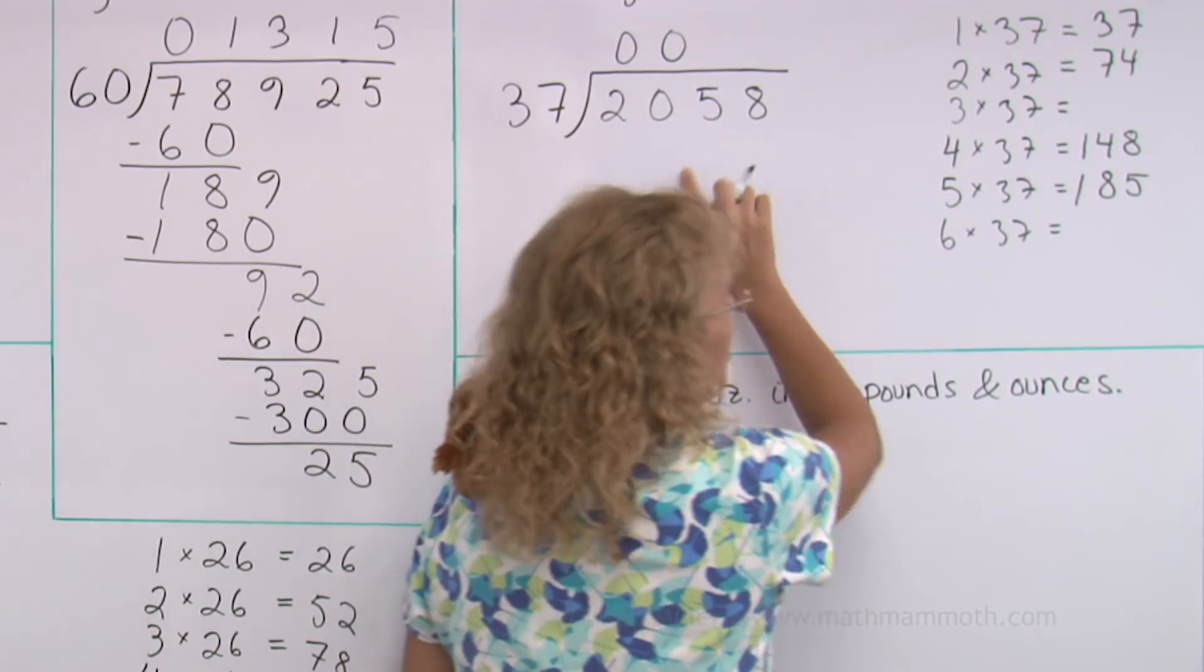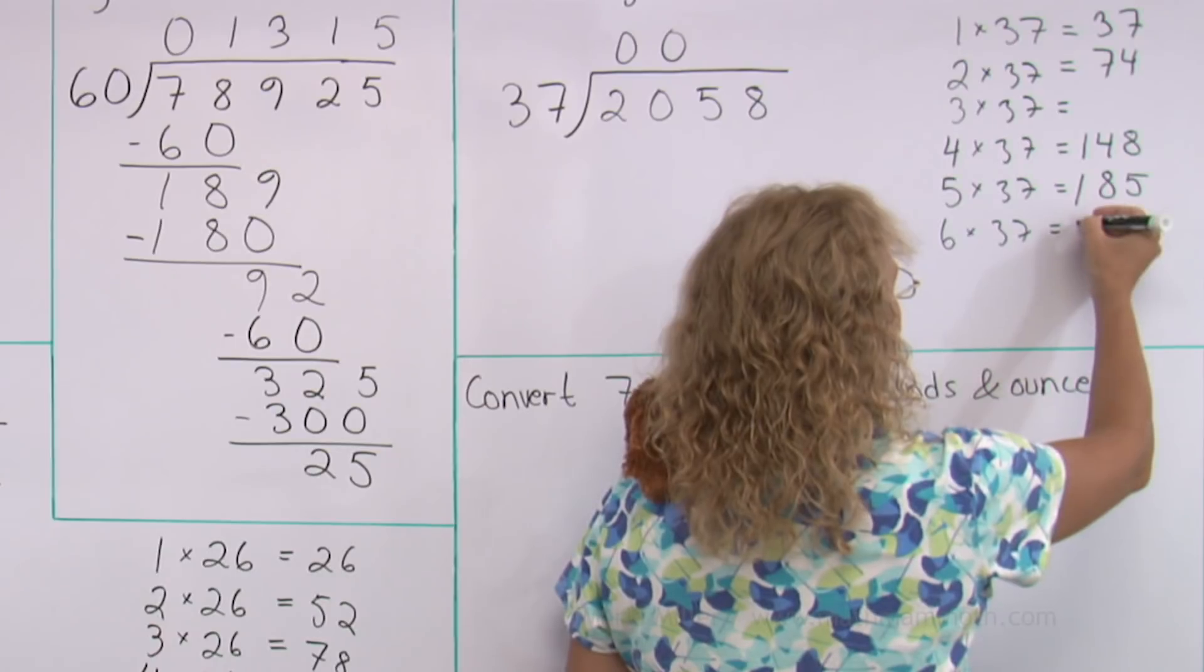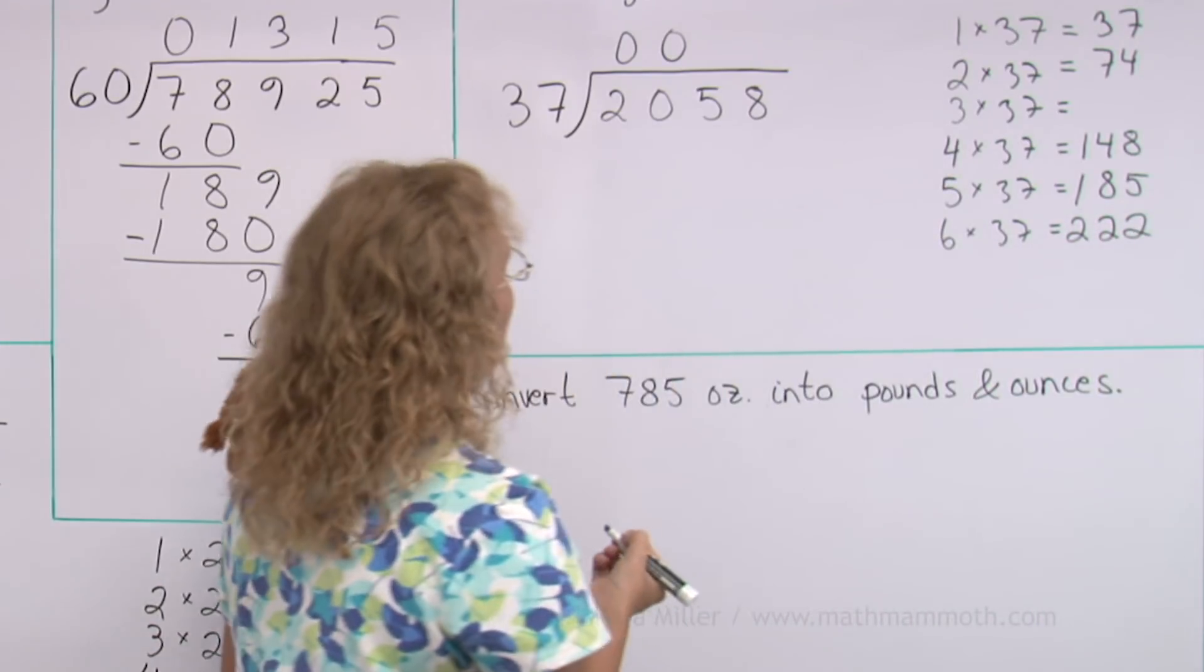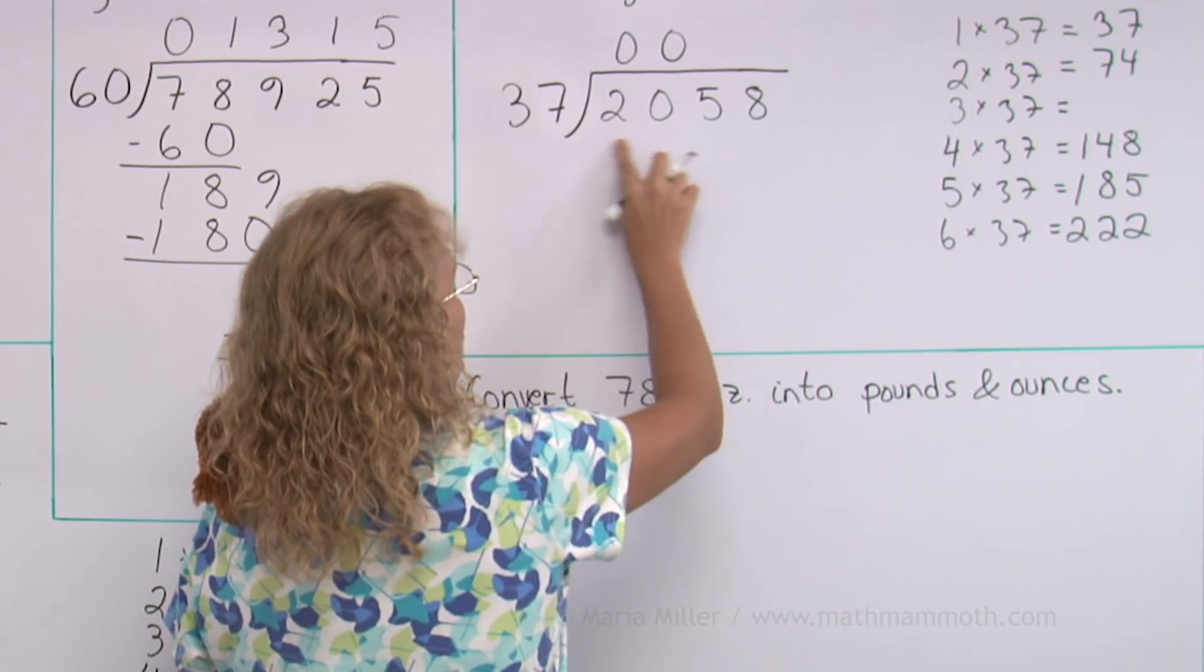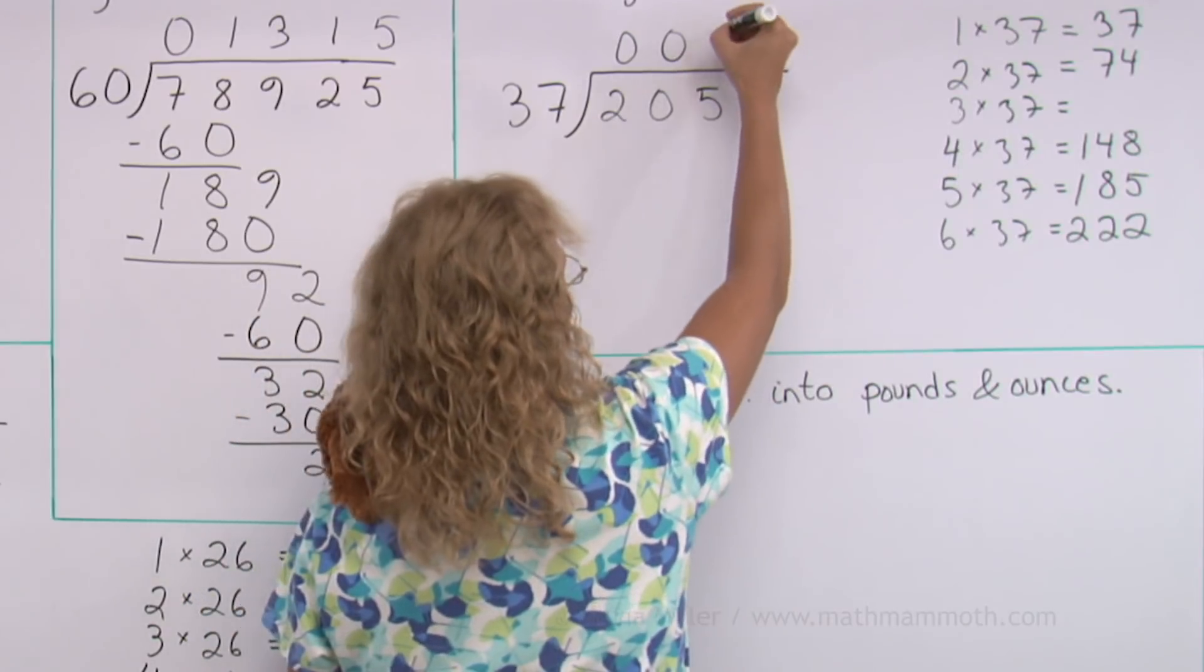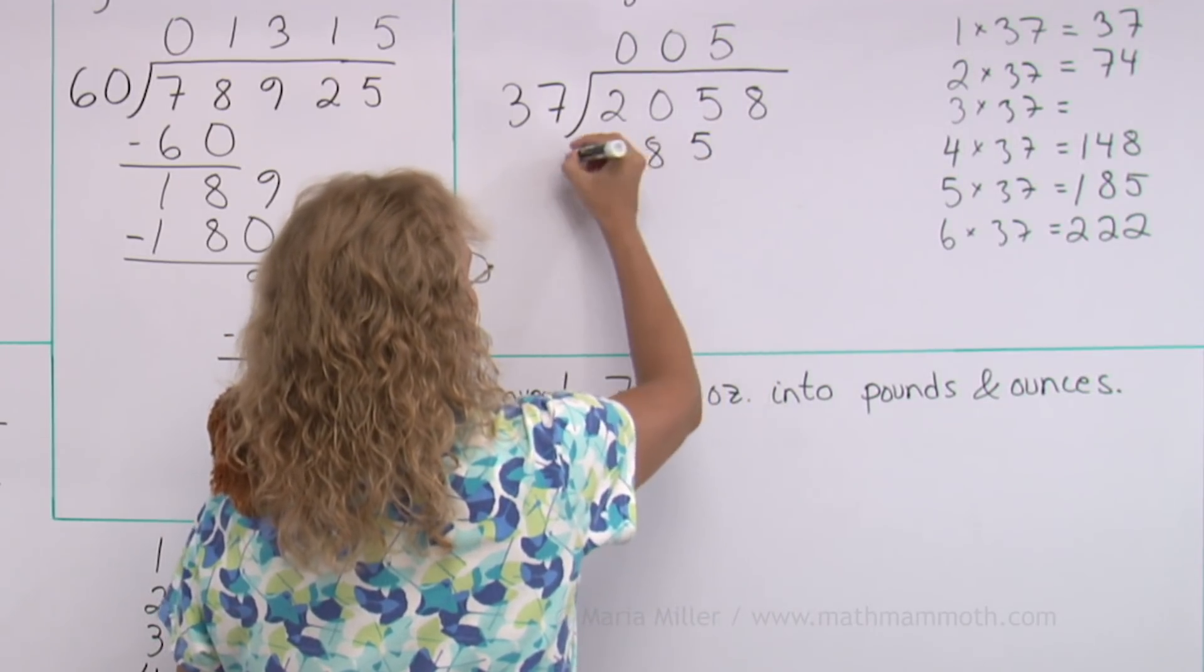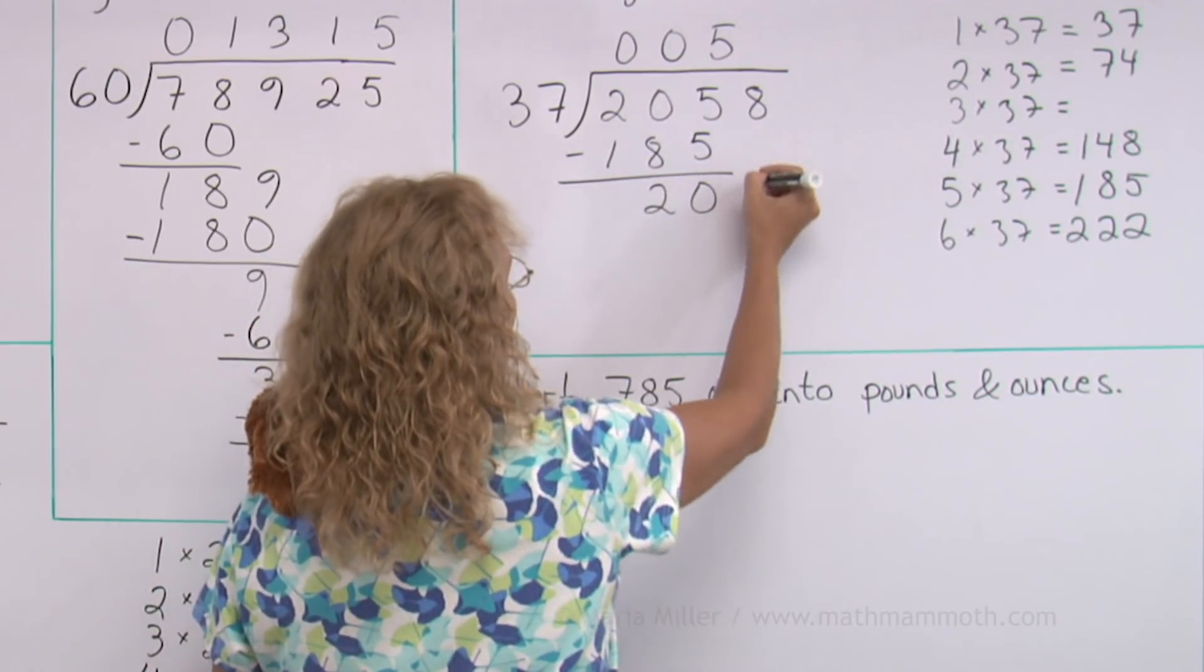5 times 37 would be 185. No, that's not yet 205. Add 37, we should get 222. Okay. That went over that. So we can see, 5 times. 37 goes into 205, 5 times. And that is 185. Now subtract. We get 20 here. Drop down 8.